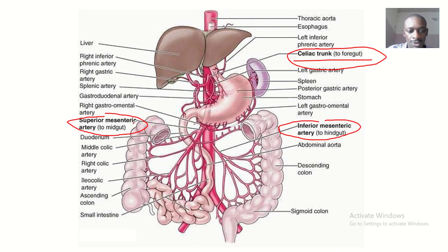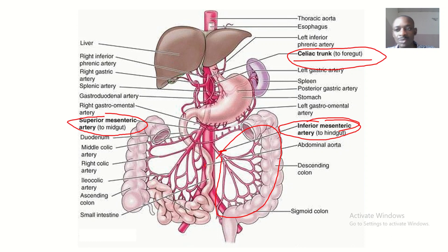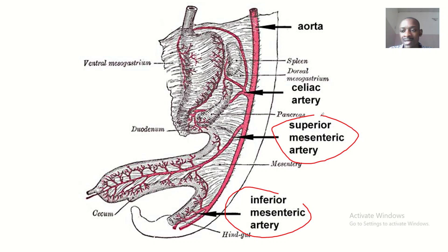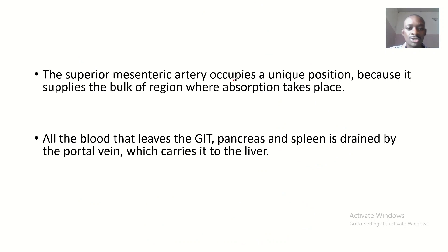Tracing the inferior mesenteric artery on the diagram, you can see its branches going mainly to the large intestine. You can pause the video to trace the superior mesenteric artery and the celiac trunk as well. To recap: the inferior mesenteric artery supplies parts of the large intestine; the superior mesenteric artery supplies the small intestine and some parts of the large intestine; and the celiac trunk supplies the liver, stomach, and spleen.